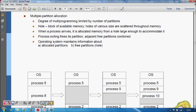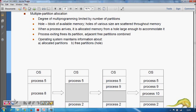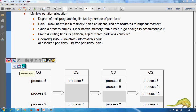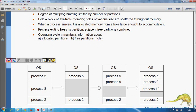Multiple partition allocation: the degree of multiprogramming is limited by the number of partitions. If you see, this is the main memory where process 5, process 8, and process 2 are running in parallel. Process 8 is a big program application that is occupying a bigger memory chunk.